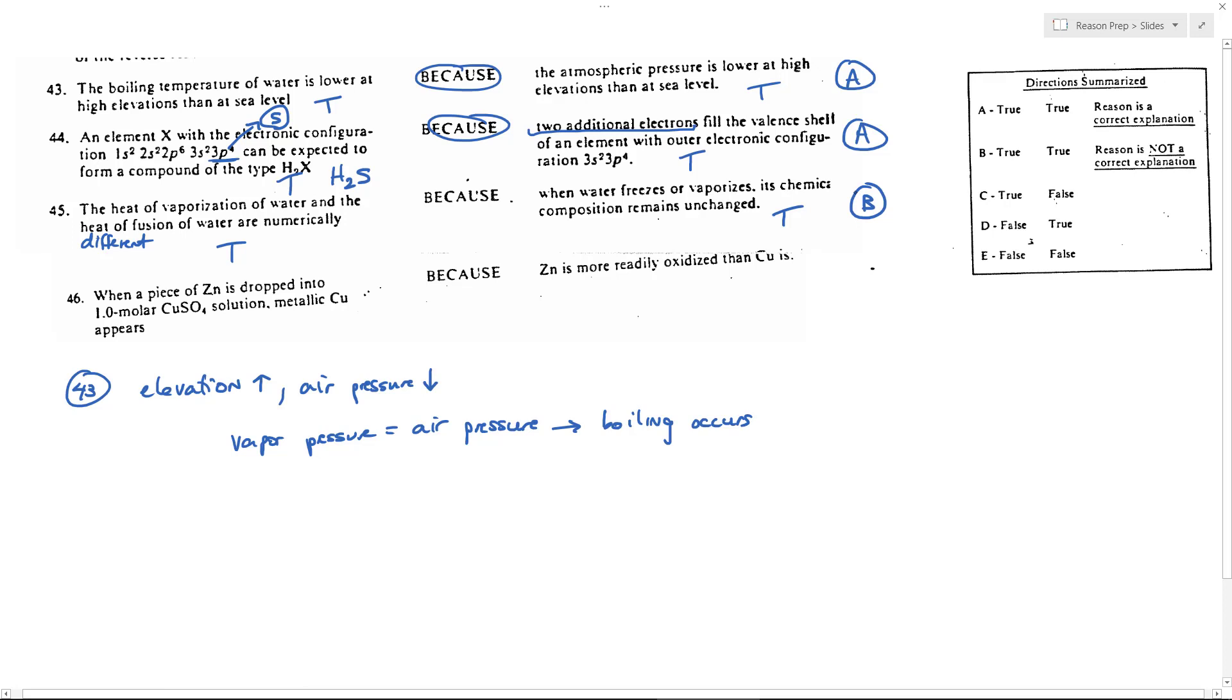When a piece of zinc is dropped into one molar copper sulfate, metallic copper appears. This one's pretty hard because you need to - it's in the factoid sheet - there's an activity series there. Whether you actually have to memorize that for more recent versions of this test is unclear. If you have the time and energy, memorizing it or learning it pretty well would be useful. But it is useful to know that zinc is more active than copper.